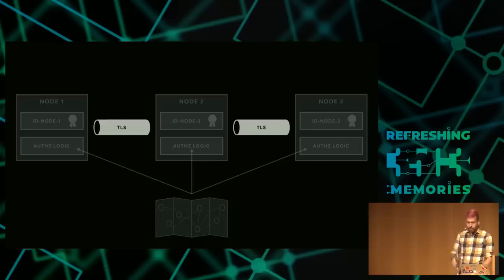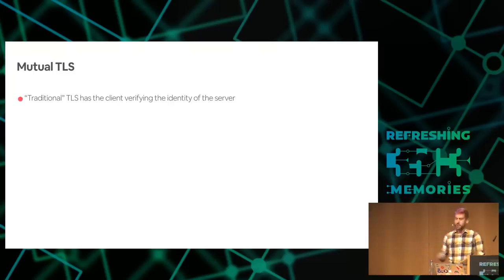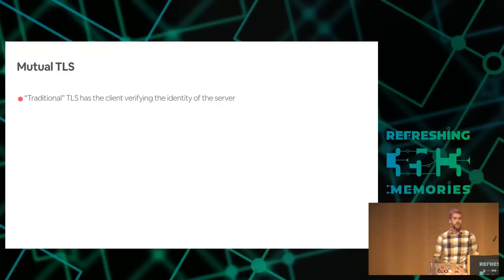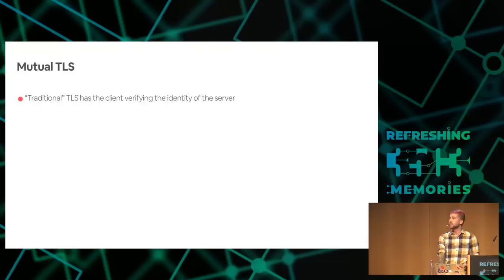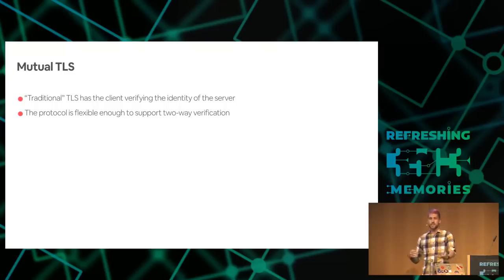Let's jump into the implementation of TLS. We're using mutual TLS. You've certainly heard of traditional TLS — that's what your web browser uses, where a client verifies the identity of a server by checking the certificate's subject alternative name or CN against the domain name. But TLS actually supports verification in both directions out of the box: the client can also present a certificate in the initial handshake, and the server can check who is talking to it using an equally strong authenticator.